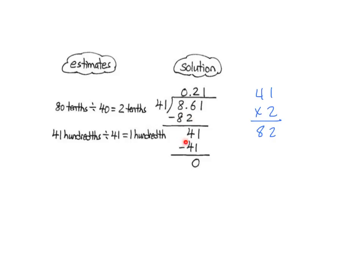Next, we multiply our estimate of 2 times the divisor and get 82, recorded below the dividend. We subtract and get 4 — that's 4 tenths. We exchange 4 tenths for 40 hundredths and bring down that 1 hundredth, so we have 41 hundredths. Our difference here is equal to our divisor, so it's easy enough to tell that we have a 1 in that place.